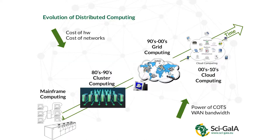If we look at the evolution of scientific computing in the last 25-30 years, we have steadily evolved from a centralized approach to a decentralized approach. We went through mainframe computing, clustered computing, grid computing, and now cloud computing. This has been possible thanks to the combined action of reduction in cost of hardware and networks, and increase in the power of CPUs — commercial off-the-shelf components — and the bandwidth of geographic wide area networks.